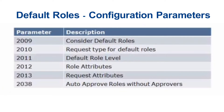For example, you can add these roles at company level, business process level, system level, or landscape level, etc. And along with these, one more important parameter is 2038. Parameter 2038 tells the system to auto-approve the role if there is no role owner present. This is very useful if you want to automatically assign the roles to the user when there is no role owner, especially for display roles.